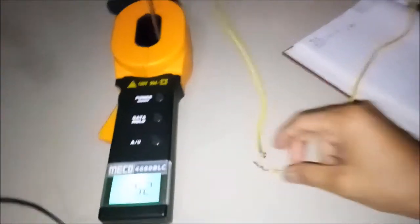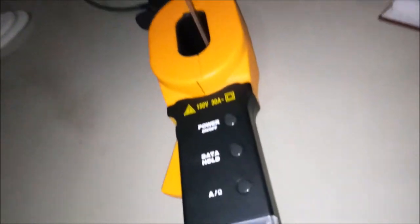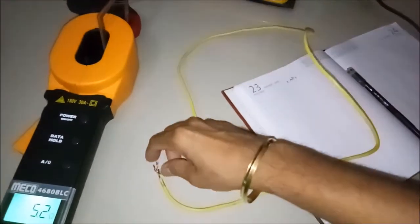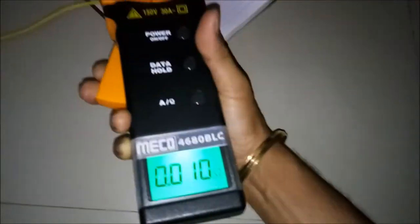Now what we'll do, we'll just take another first loop of 1.5 square millimeter wire. I think it's not 1.5, it's bigger than that. Okay, now this is another loop. It is a little bit loose just to get a higher resistance.